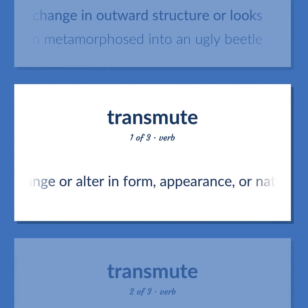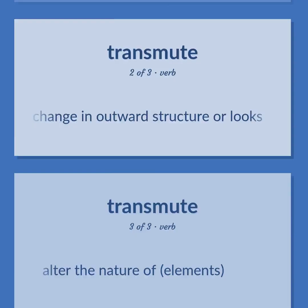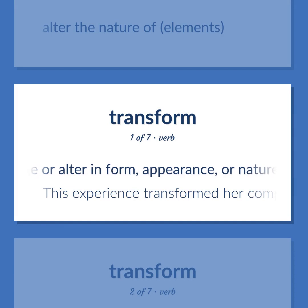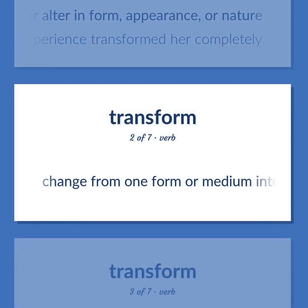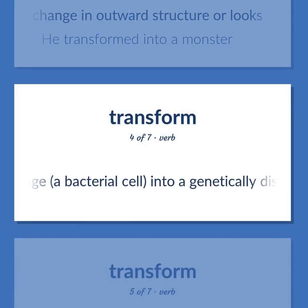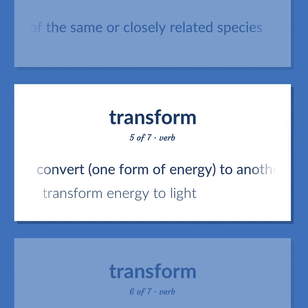Change or alter in form, appearance, or nature. Change in outward structure or looks. Alter the nature of elements. Change or alter in form, appearance, or nature. This experience transformed her completely. Change from one form or medium into another. Change in outward structure or looks. He transformed into a monster. Change a bacterial cell into a genetically distinct cell by the introduction of DNA from another cell of the same or closely related species. Convert one form of energy to another. Transform energy to light.